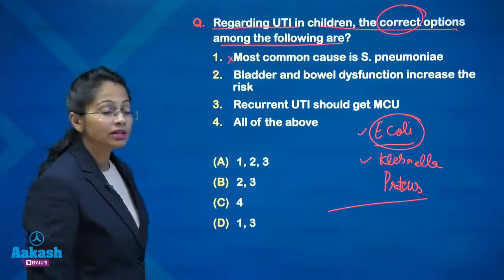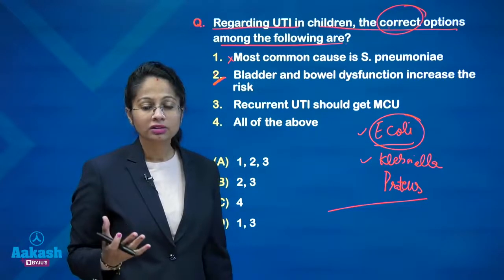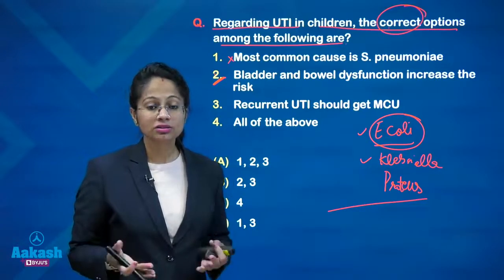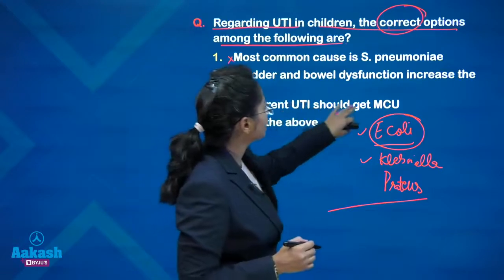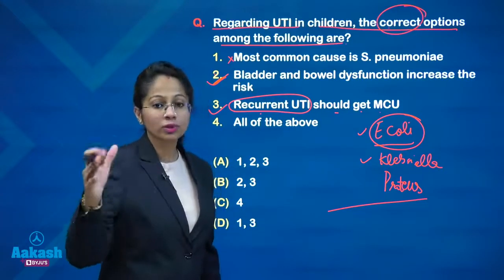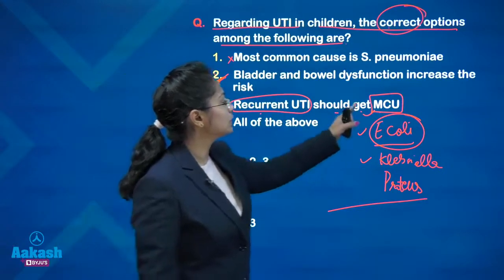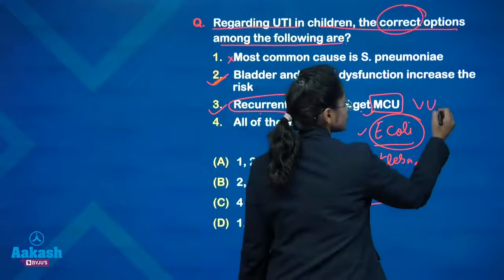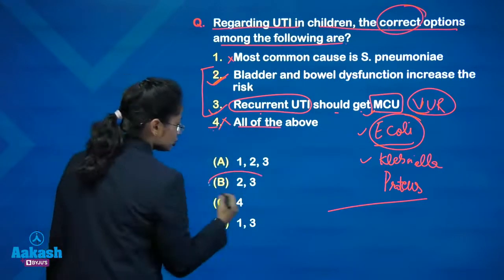Next: bowel and bladder dysfunction increases the risk — this option is true, an important risk factor for UTI. In a child with constipation, UTI chances increase. Female sex, catheterization, and voiding dysfunction are also important risk factors. Statement three: recurrent UTI should get MCU (micturating cystourethrogram) — again true. We have to do MCU in all children with recurrent UTI to rule out vesicoureteral reflux, a very common cause of UTI in children. Option 4 is all of the above — no. Answer is 2 and 3, so option B is correct.